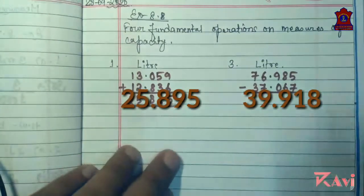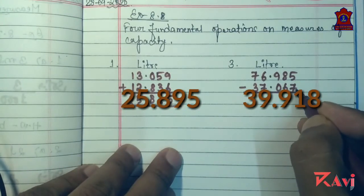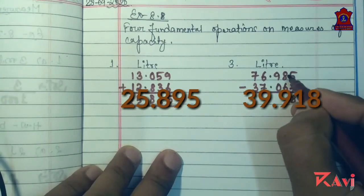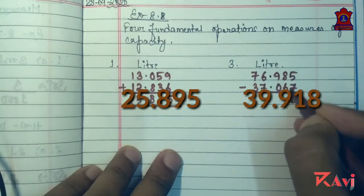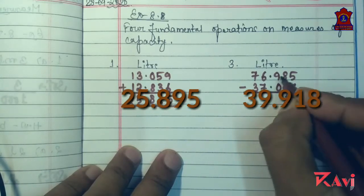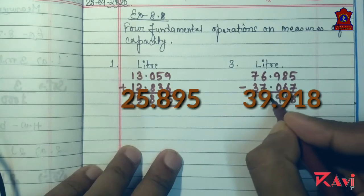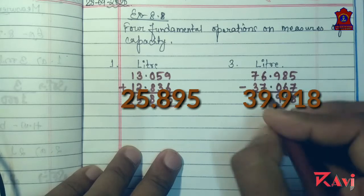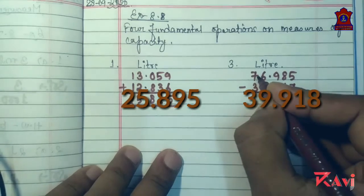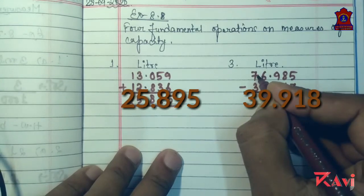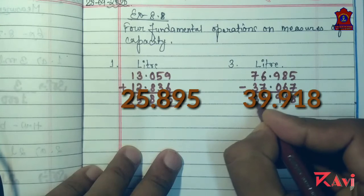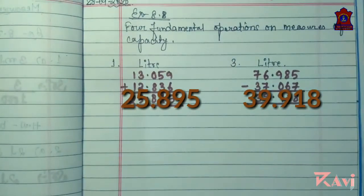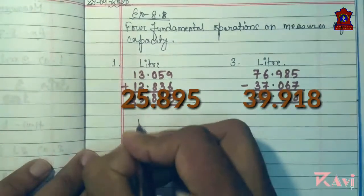Now subtraction. 5 minus 7 is not possible, so 15 minus 7 is 8. What is left here? 7. 7 minus 6 is 1. 9 minus 0 is 9. Decimal. 6 minus 7 is not possible, so 16 minus 7 is 9. What is left here? 6. 6 minus 3 is 3. Like this you have to do. Questions 2 and 4 by yourself.